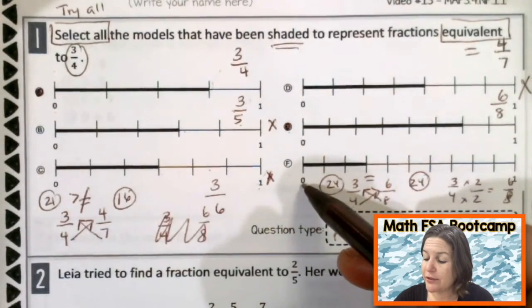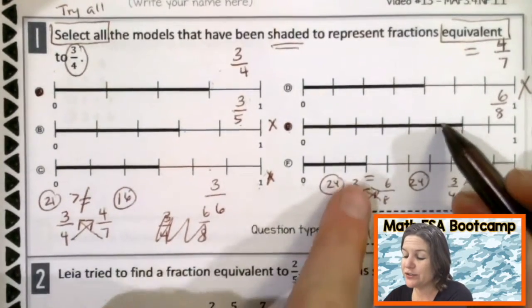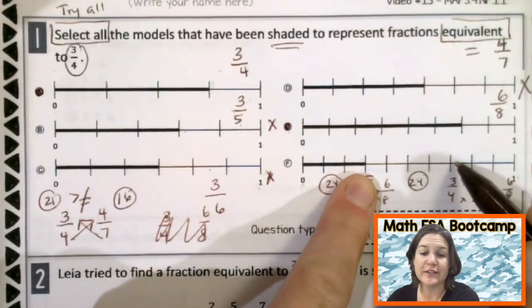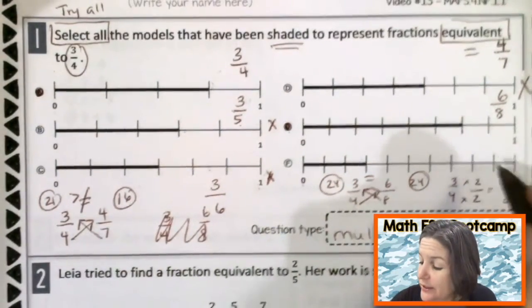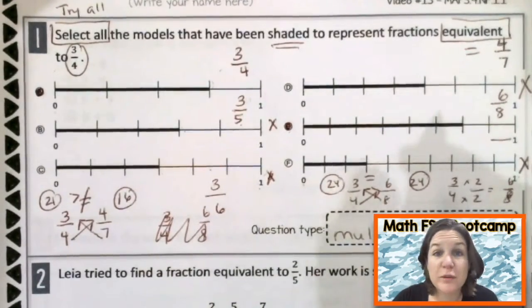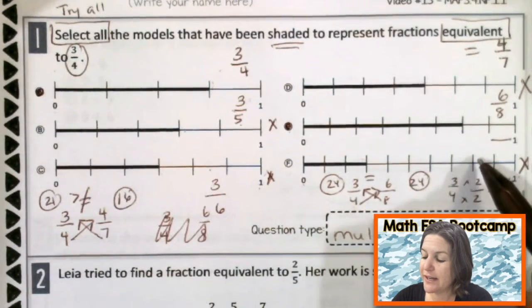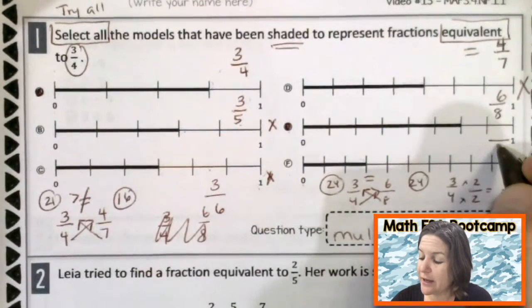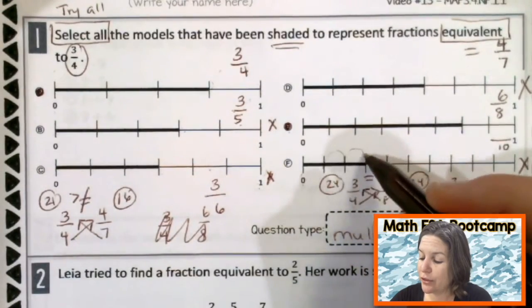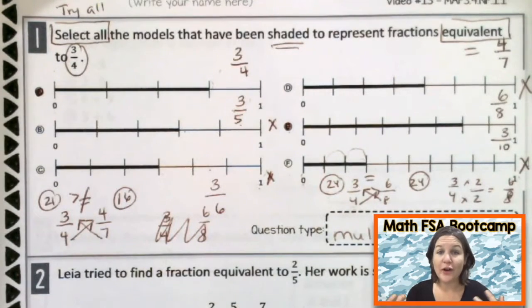And I can tell right here that here's six-eighths, which is equivalent to three-fourths. And F, zero to one, it lines up right with E. I can tell that these two fractions are not equivalent because look how much farther it is to get to where E is. So we can go ahead and eliminate F. But let's get the fraction just for practice with number lines. One, two, three, four, five, six, seven, eight, nine, ten as our denominator. And we have one, two, three as our numerator. Okay, so the correct answers for number one are A and E.